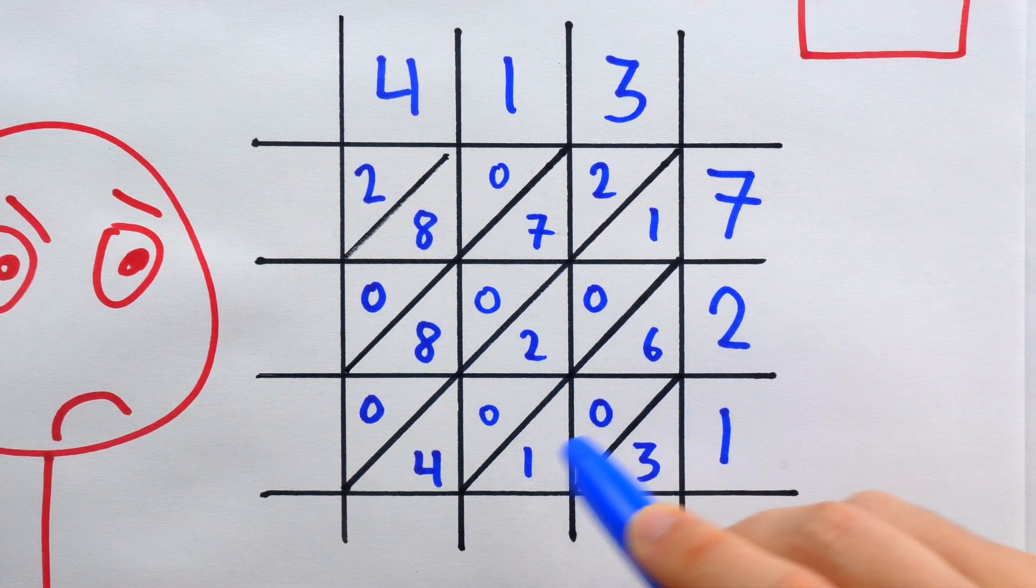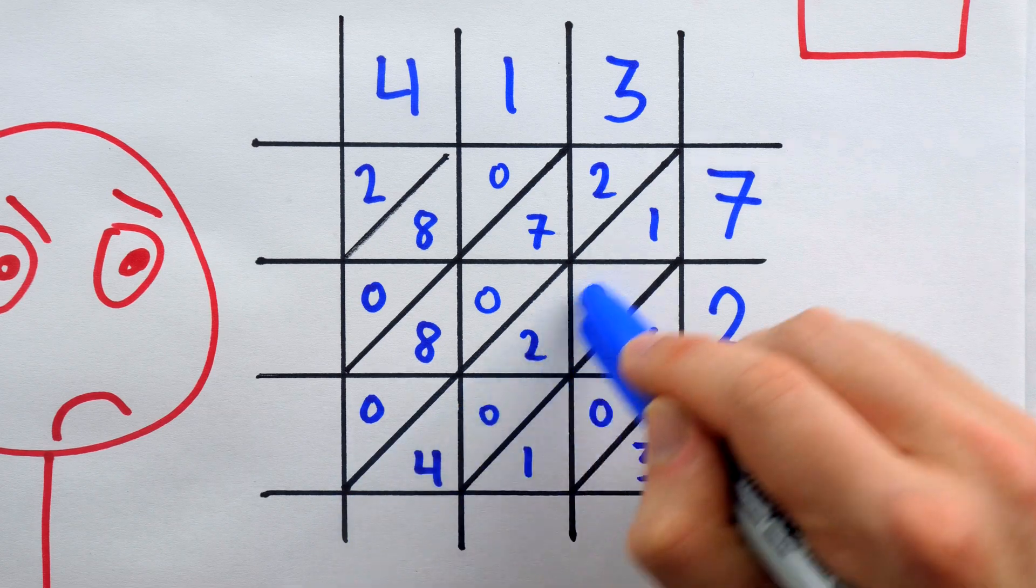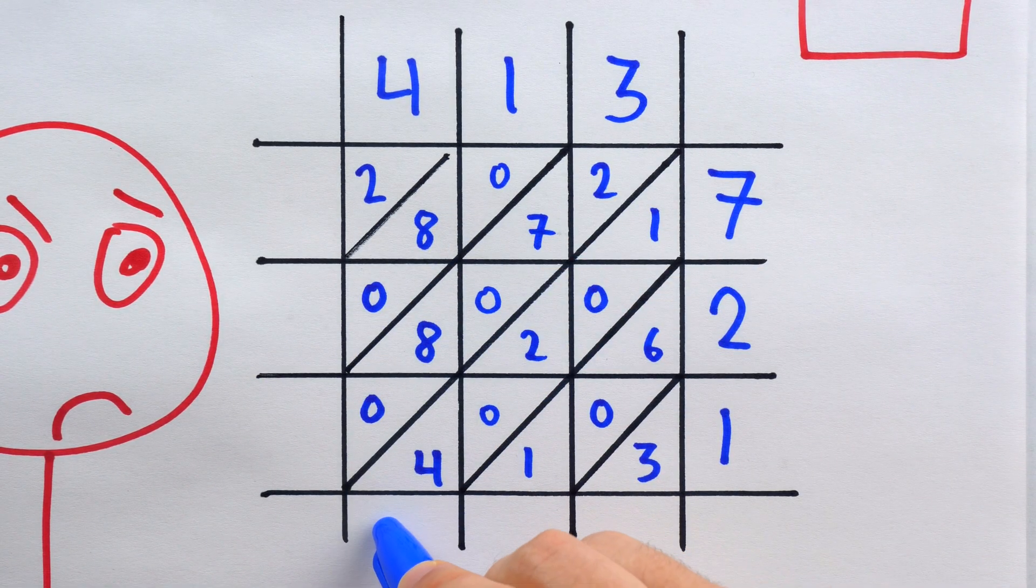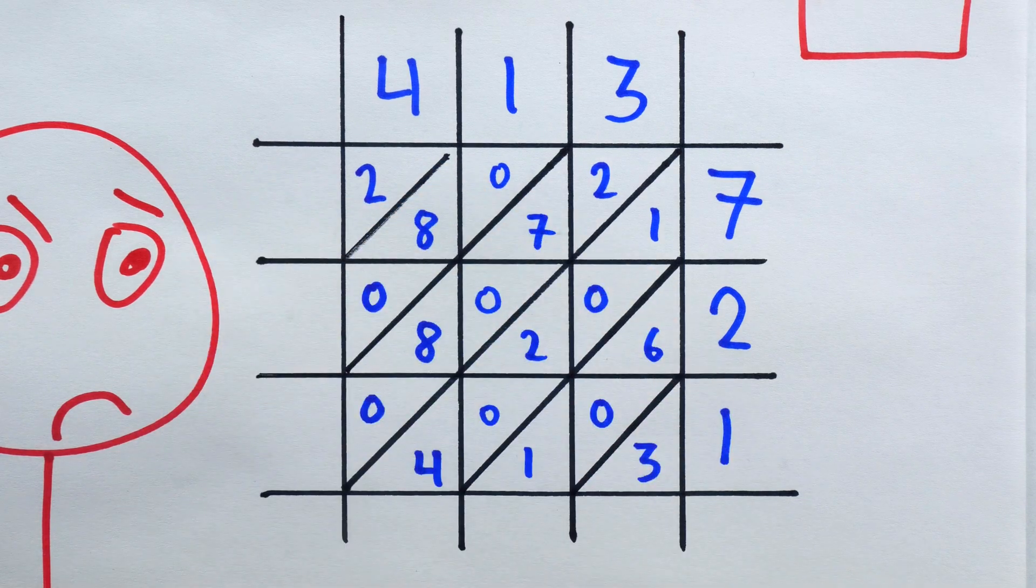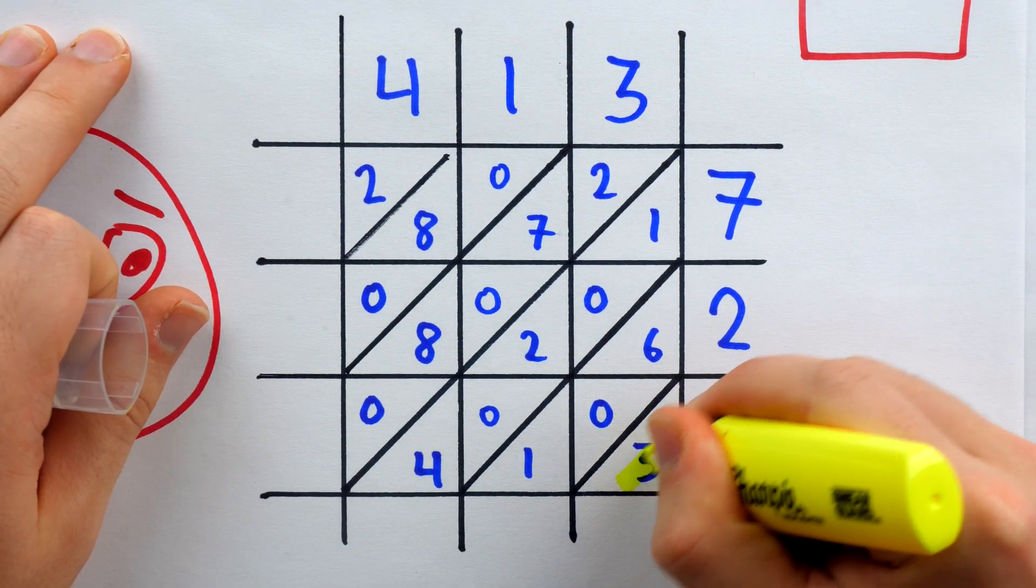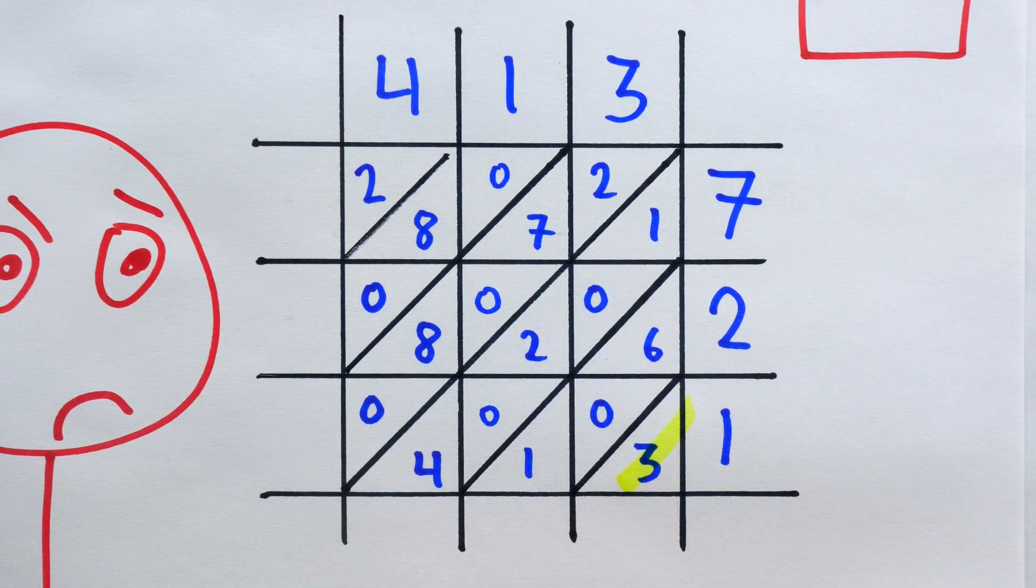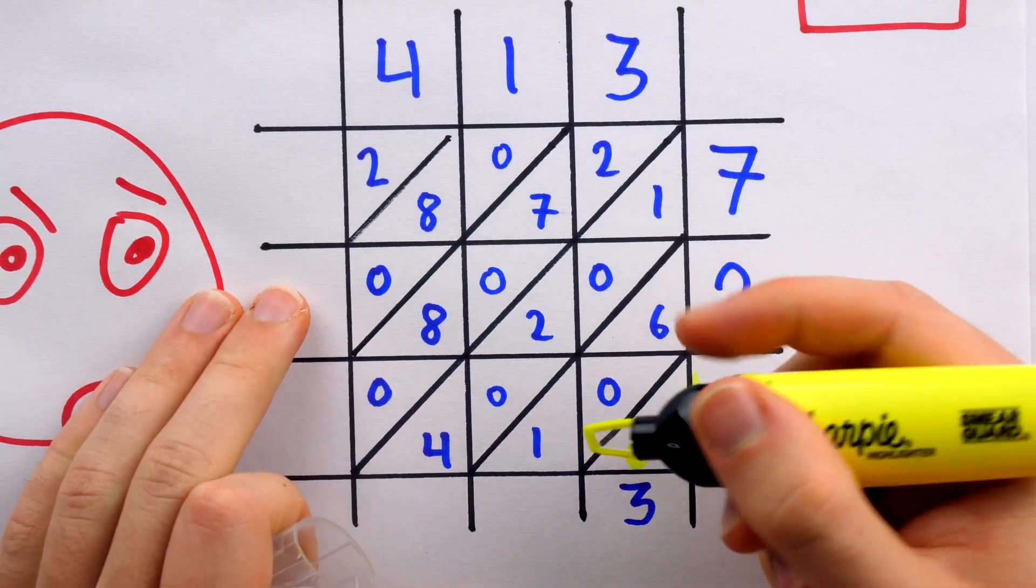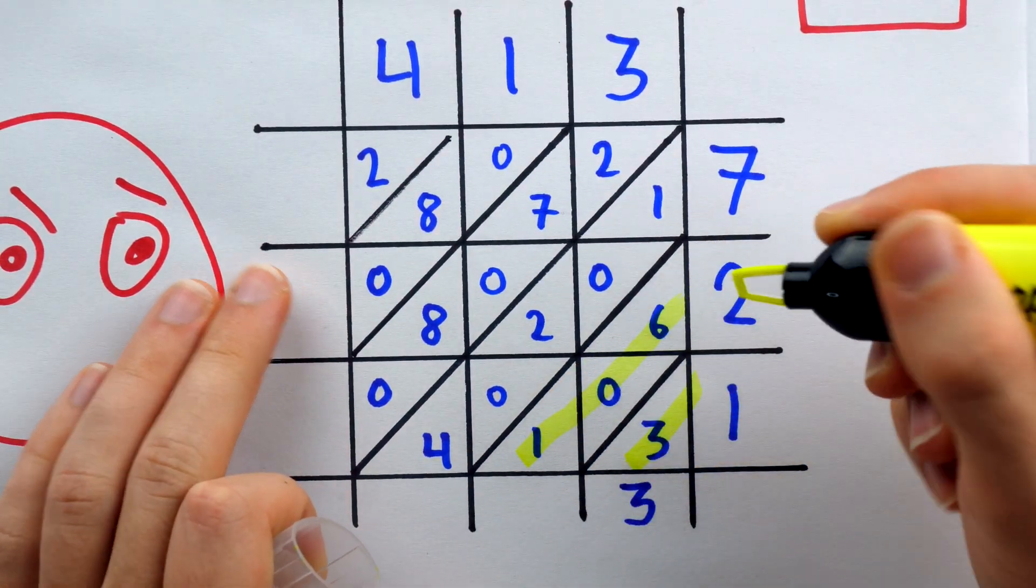All we have to do is add up these diagonal slices and put each sum in these squares at the bottom and side. So for example, this first diagonal slice gives us that 3, and that's going to be what we put here. The next diagonal slice gives us 1 plus 0 plus 6, and so we have 7.